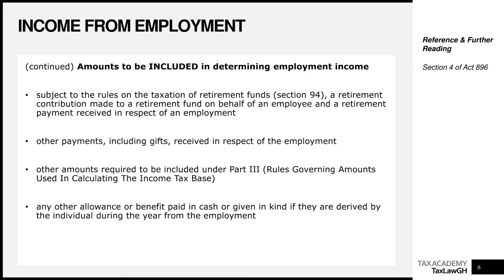The next is other payments, including gifts that you receive in respect of your employment. For example, if you are a waitress and a customer is so impressed by your service that they give you a tip, that tip is a gift received as part of your employment. You only received it because you work at that restaurant. So that tip is a gain or profit from employment and must be added to your employment income and taxed accordingly.